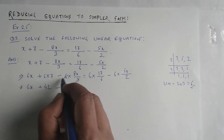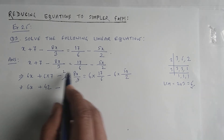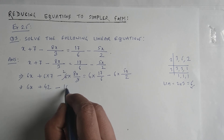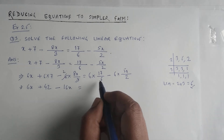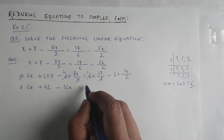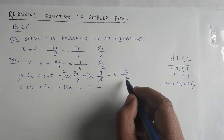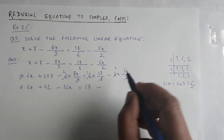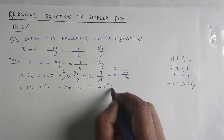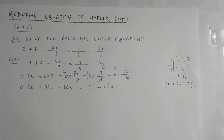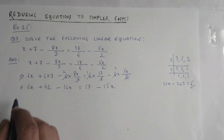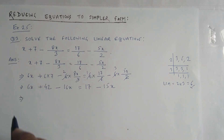After multiplication: 6x plus 42 minus 16x equals 17 minus 15x. There is no denominator anymore — the equation has become a simpler form. Of course, it still has the variable x on both sides, but it's now much easier to work with.